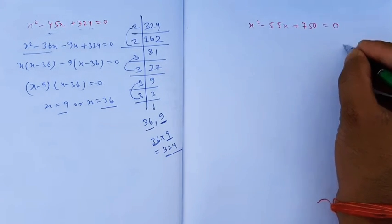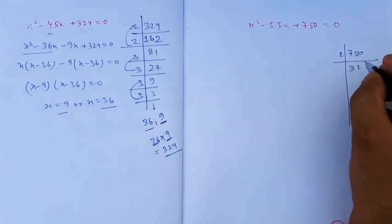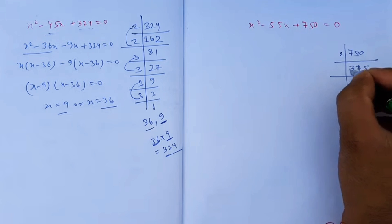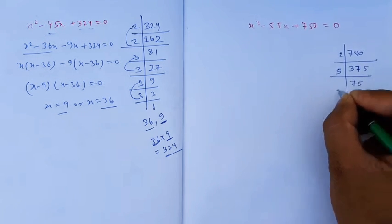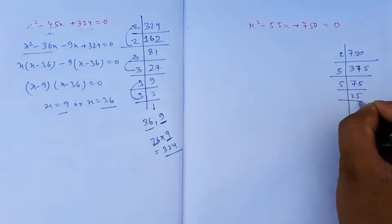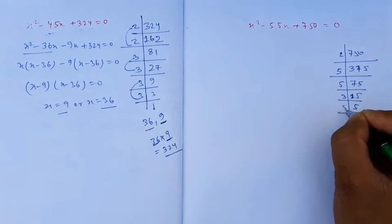To solve this, we find the factors of 750 by dividing: 750, 375, 75, 15, 5, and 1.